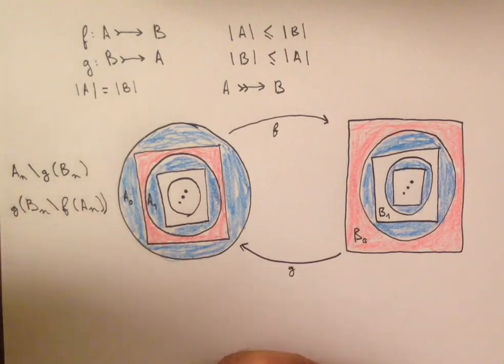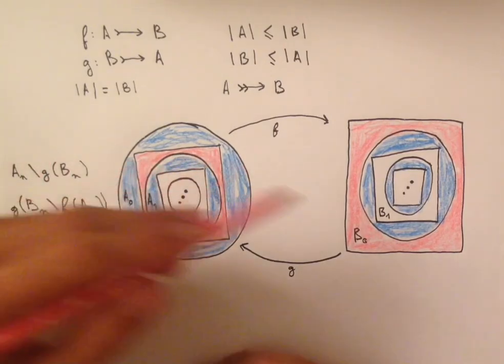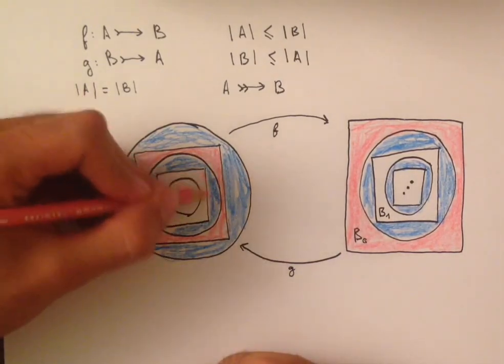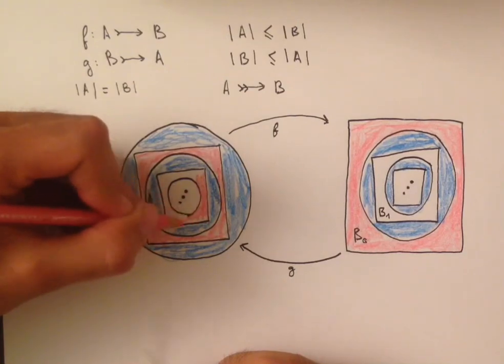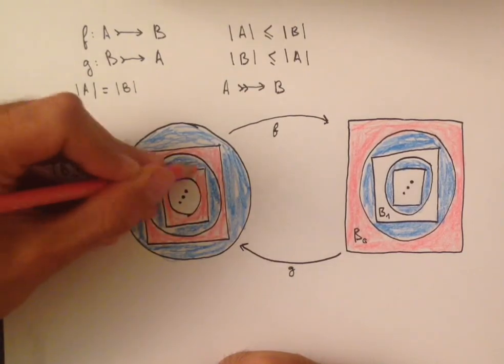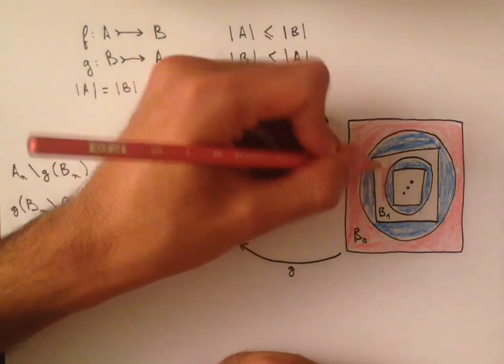And it, once again, gives us a bijection from this set onto this set. And so we do the same with this inner one as well. This one is going to map to this one.